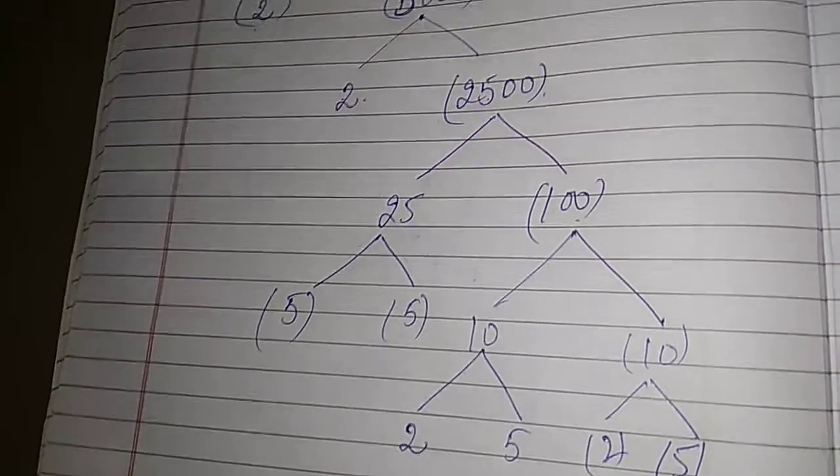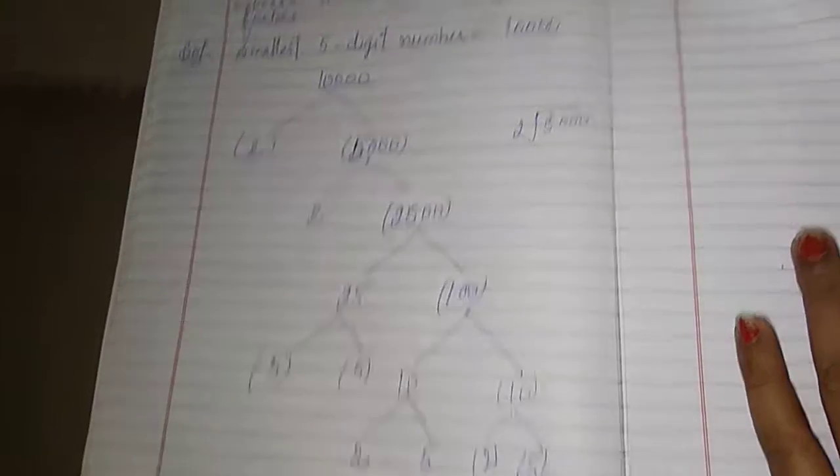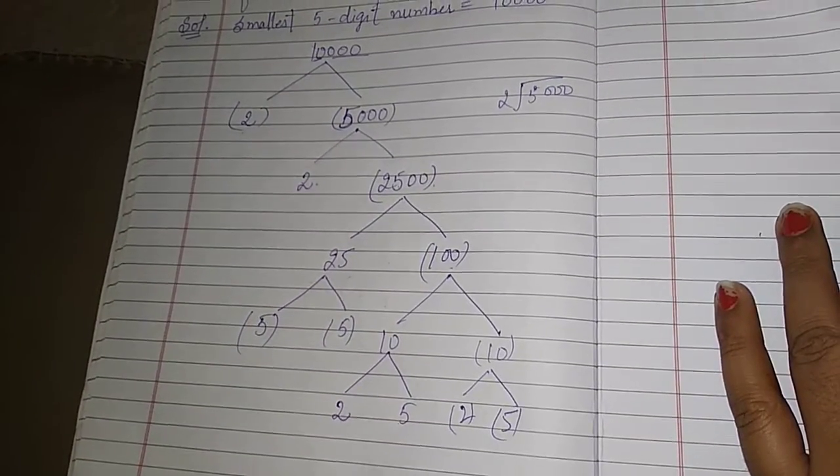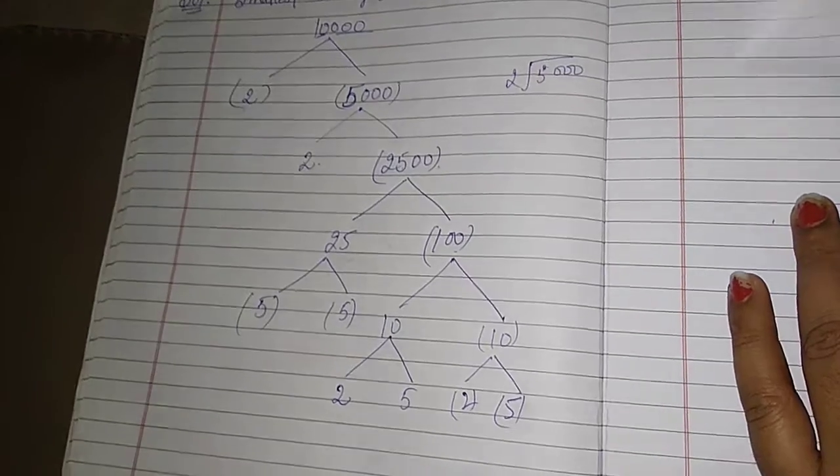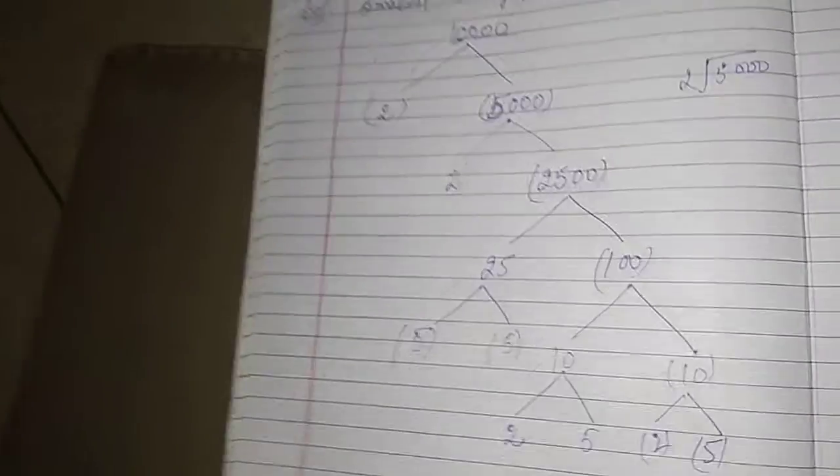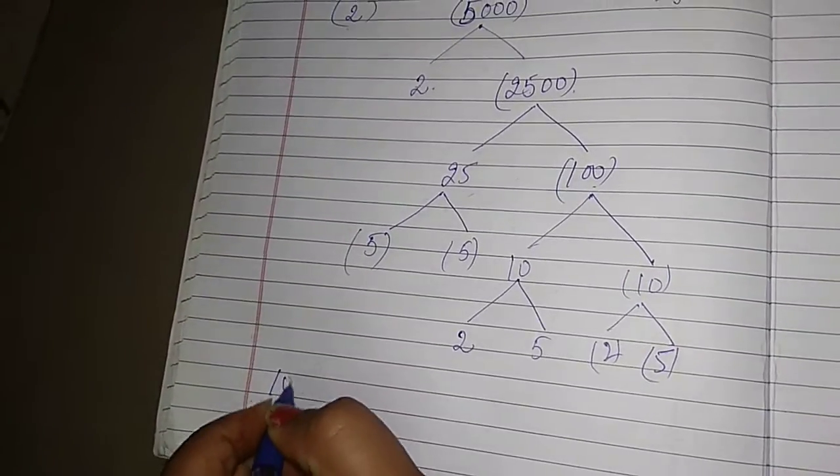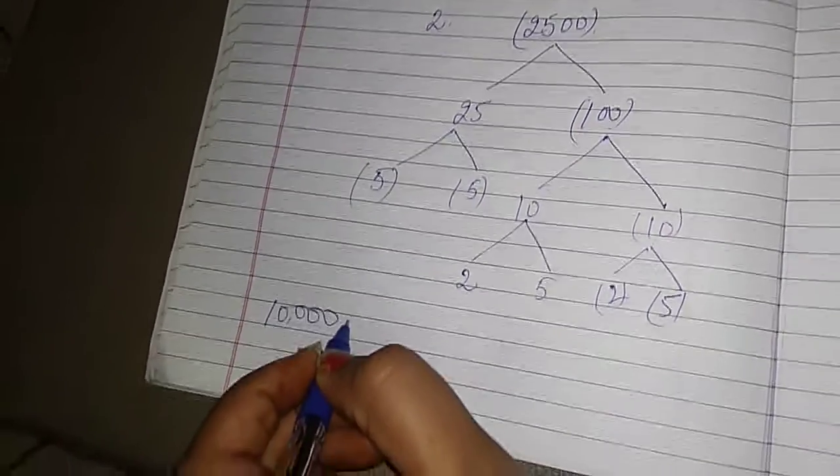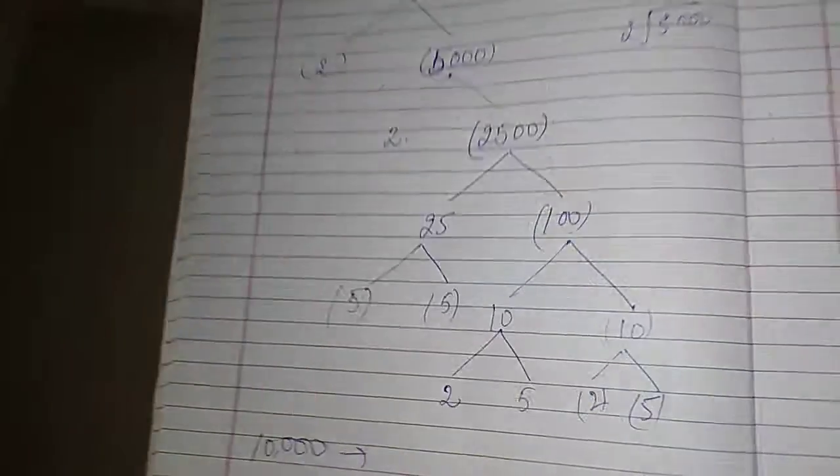In this form, this is total 3 forms of factors written here. Now we can express this. 10,000. Its factors start from here.